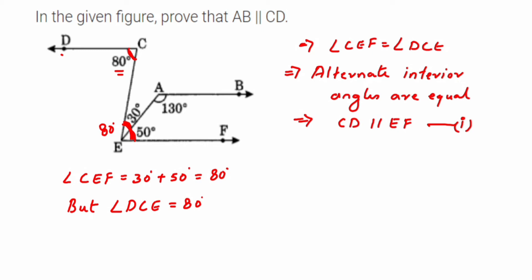Next, I want to show that line EF is parallel to AB. If you look at the figure, angle BAE is 130 degree and angle FEA is 50 degree, and they are lying on the one side of the transversal. So if you add 130 and 50, we get 180 degree. We know that angles lying on one side of the transversal sum to 180 degree. This means that AE will become the transversal and AB and EF will become parallel lines.